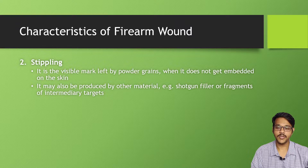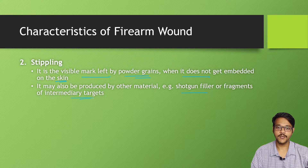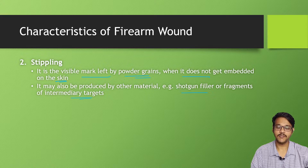The next characteristic is stippling. Stippling is a visible mark left by powder grains when they do not get embedded in the skin. These are usually caused by partially burnt materials like shotgun fillers, wads, or fragments of intermediate targets — not gunpowder particles themselves — that get embedded near the wound. This is called stippling.